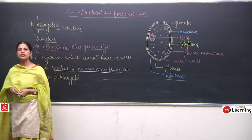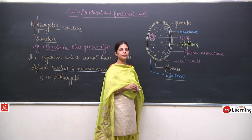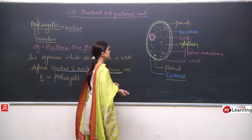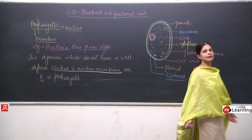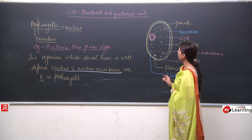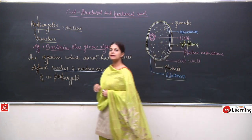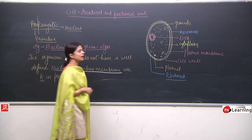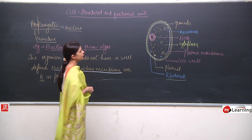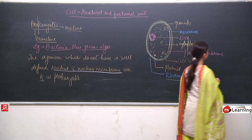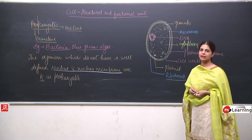Now we will talk about the differences between prokaryotic and eukaryotic cells. A prokaryotic cell is a primitive kind of cell which does not have a well-defined nucleus — a single DNA strand is present. Whereas in eukaryotes, many chromosomes of DNA are present. Also, ribosomes are smaller in prokaryotes.